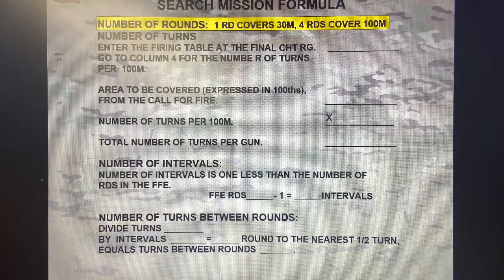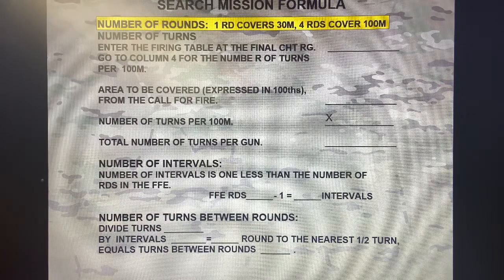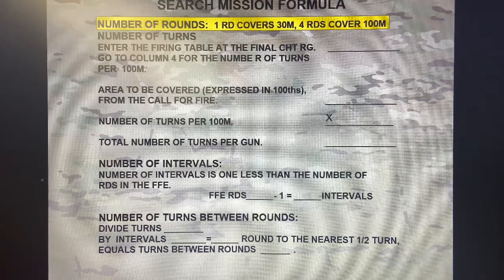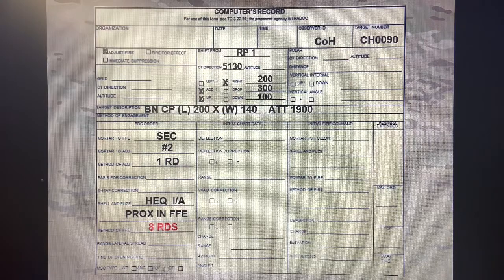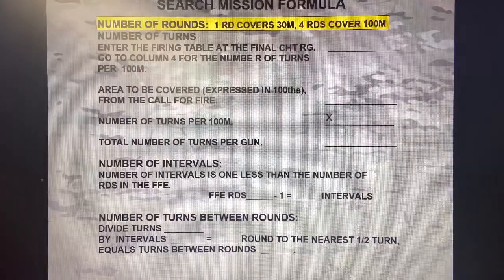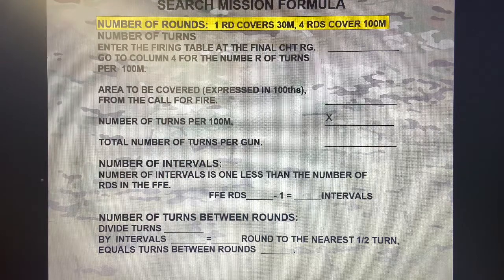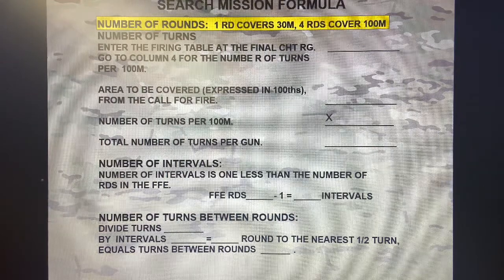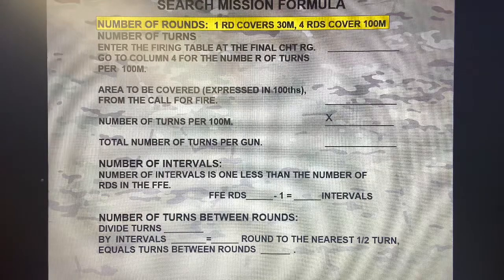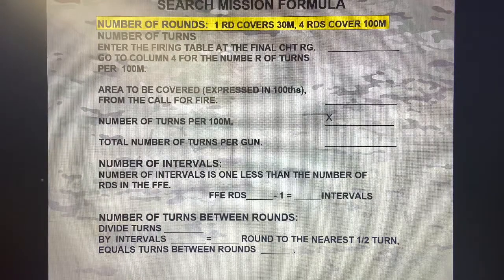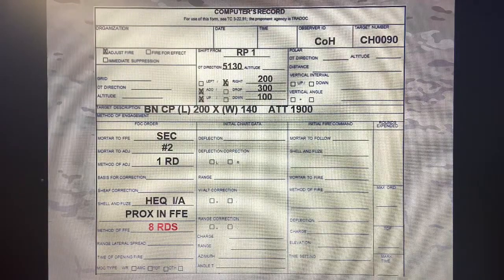Based on our target length, we're trying to achieve 200 meters. We know four rounds covers 100, so we multiply four by two to give us a total of eight rounds. Our fire for effect is going to be eight rounds, and we'll go ahead and conduct that when ready.